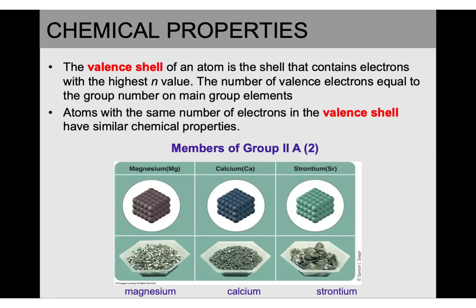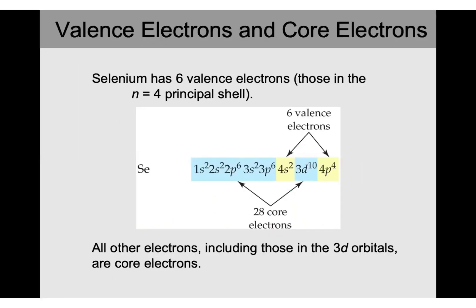The number of valence electrons equals the group number for main group elements. To find valence electrons from electron configuration, look at the highest n value — the highest number in front of a subshell. For example, for selenium with 34 electrons, look at the highest shell number — it's 4 — and add up the electrons in those subshells (s and p). For groups 3A through 8A, add up s and p subshell electrons to find valence electrons. Selenium has six valence electrons.